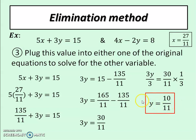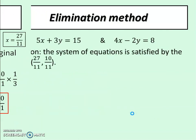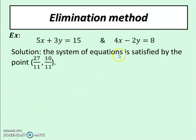And it should be that if I plug that into either one of these two, it should work out the same way. In fact, it should be that if I plug that answer into both of these, they are satisfied. That means that they work. That means 5 times 27 over 11 plus 3 times 10 over 11 is equal to 15, and that 4 times 27 over 11 minus 2 times 10 over 11 is equal to 8. So if you want to try that out, you should find that that works.